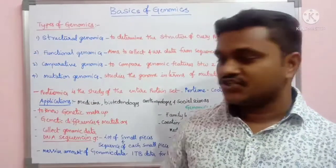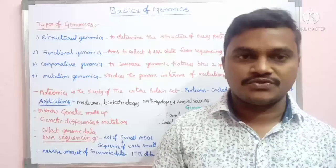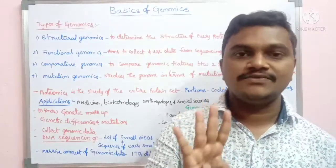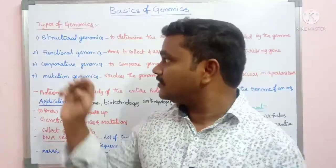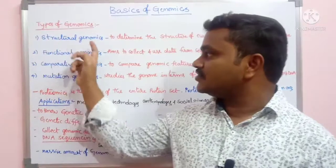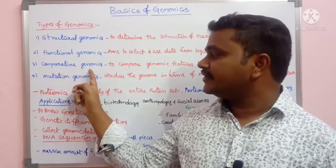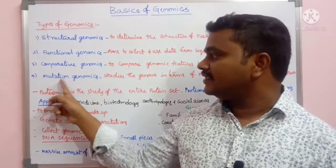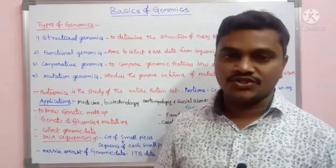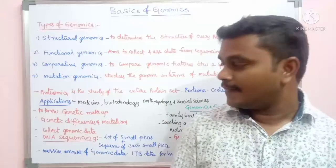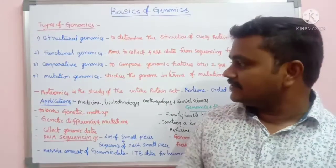The fourth type is mutation genomics. So the four branches of genomics are: structural genomics, functional genomics, comparative genomics, and mutation genomics.